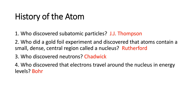We're going to start with history of the atom. Who discovered subatomic particles? That was J.J. Thompson. Originally we said he discovered the electron, but really he just discovered that there were negatively charged particles. He thought it was the Plum Pudding model — that those negatively charged particles were in a positively charged mass. But basically he discovered that atoms have subatomic particles.